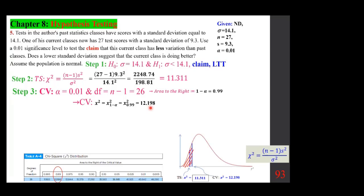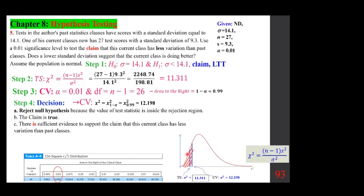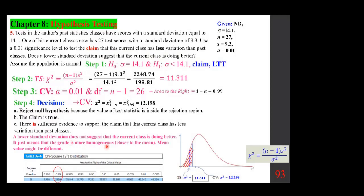The test statistic of 11.311 is less than the critical value of 12.198, placing it in the rejection region (chi-squared starts from 0 and goes to infinity — no negative values). Therefore, reject the null hypothesis and the claim becomes true. There is sufficient evidence to support the claim that the current class has less variation than past classes. However, a lower standard deviation doesn't mean students are doing better — it just means grades are more homogenous, closer to the mean.